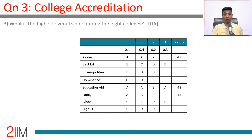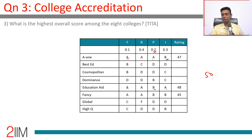What is the highest overall score among the eight colleges? Among the AAA colleges, A1 has A weight 0.7 and B weight 0.3, giving 50×0.8 + 40×0.2 = 40 + 8 = 48. Education Aid scores exactly 45. So the highest overall score is 48.